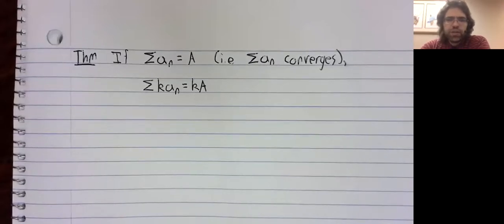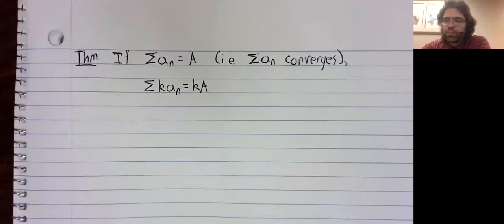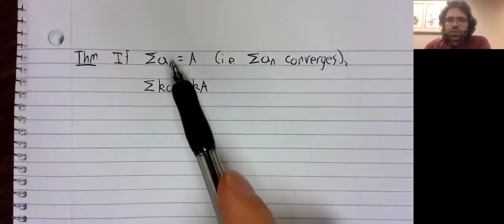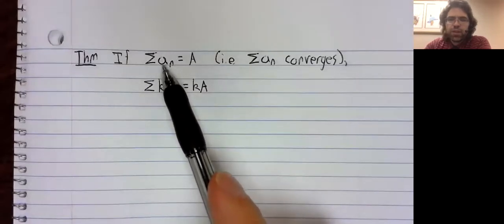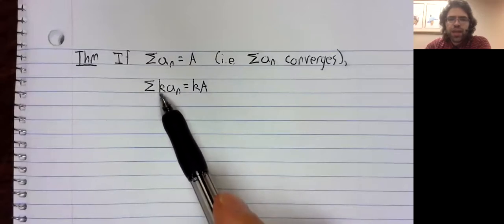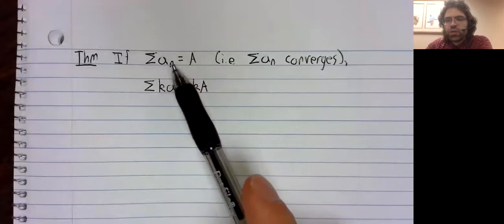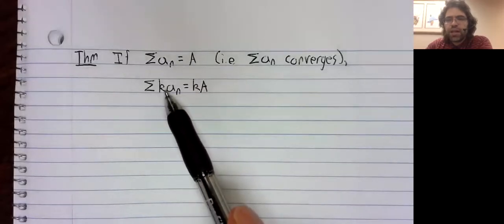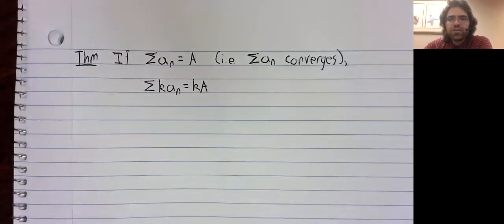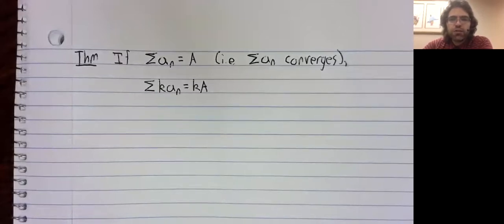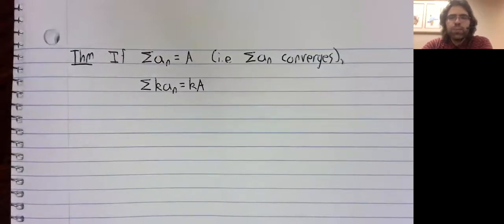A corollary of that last theorem is that if you have a convergent series, and you multiply the terms by some constant K, the resulting series still converges. And the converse of this is true. Just like taking a convergent series and multiplying it by K won't stop it from being convergent, taking a divergent series and multiplying it by K won't stop it from diverging.